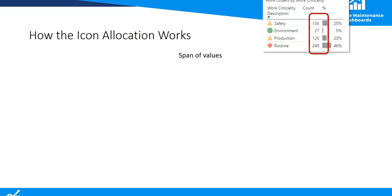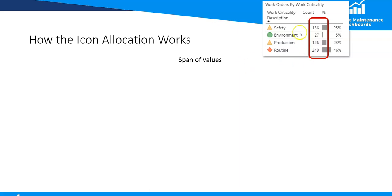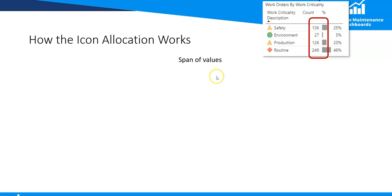Here's how we actually sort this out. The first thing we need to do is understand how these values are allocated. The first thing Power BI does is it looks at the span of values which are in the current filter context. We can see here this span is between 27 and 249, so the minimum value in this range is 27 and the maximum value is 249.